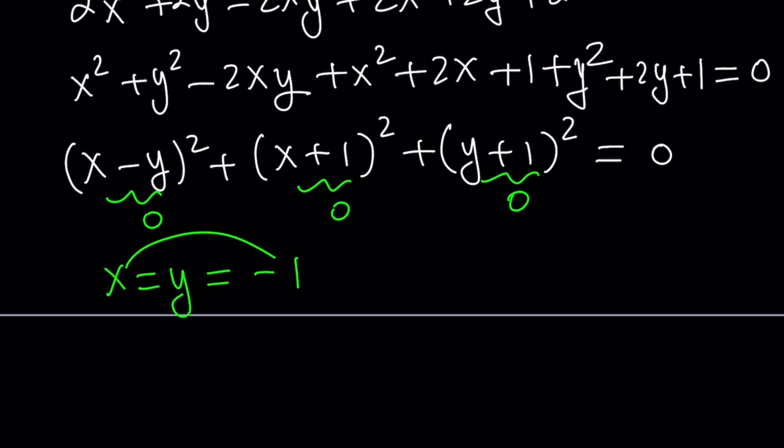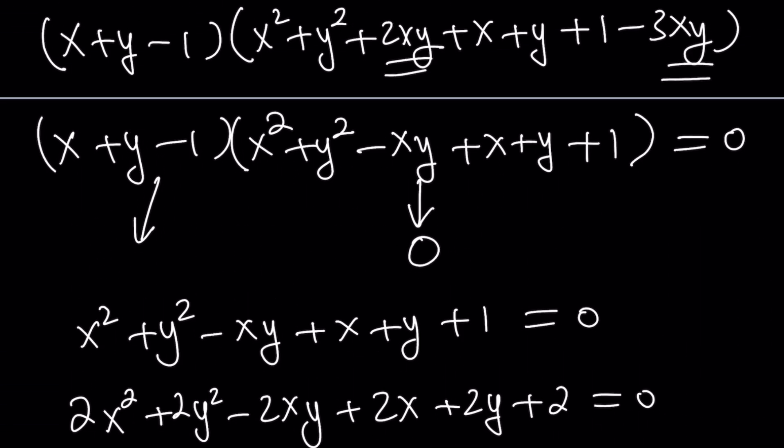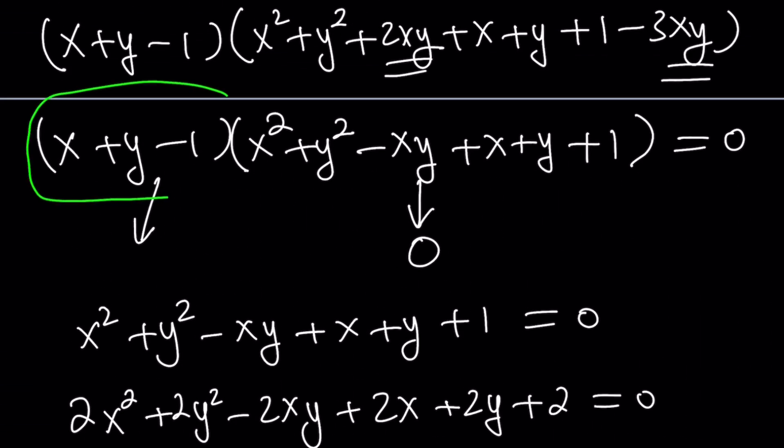But we do know that x does not equal negative 1. We don't care about y at this point, but x cannot equal negative 1. Therefore, y cannot equal negative 1 either. This case is eliminated. At least we know we're not going to be able to proceed with this, so we have to go with the other equation, which is a lot simpler.